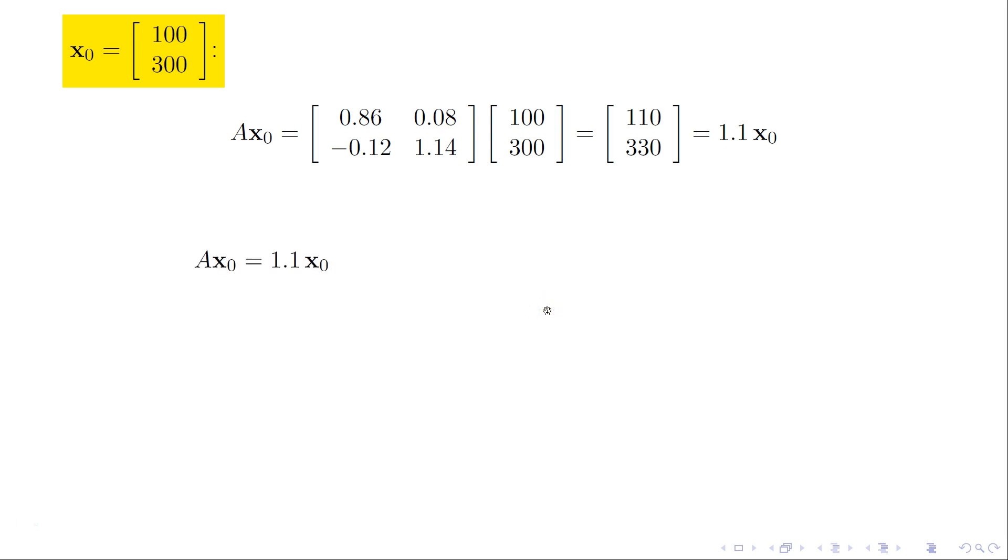A times x0 is just 1.1 times x0. And so we would call x0 an eigenvector with eigenvalue 1.1 for this matrix A. And an eigenvector initial state is easy to keep track of here because if I multiply it by A again, I'm just going to put another 1.1 on there because of the linearity.